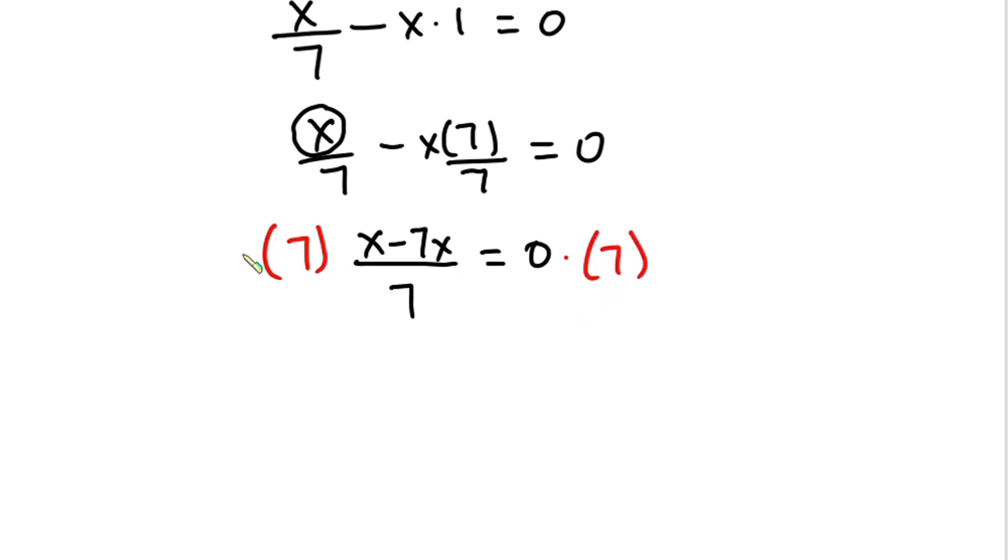Right, so we see that this 7 and then this one will go. We have x minus 7x is equal to, any number times zero is zero, right? So we have x minus 7x which is negative 6x is equal to zero.